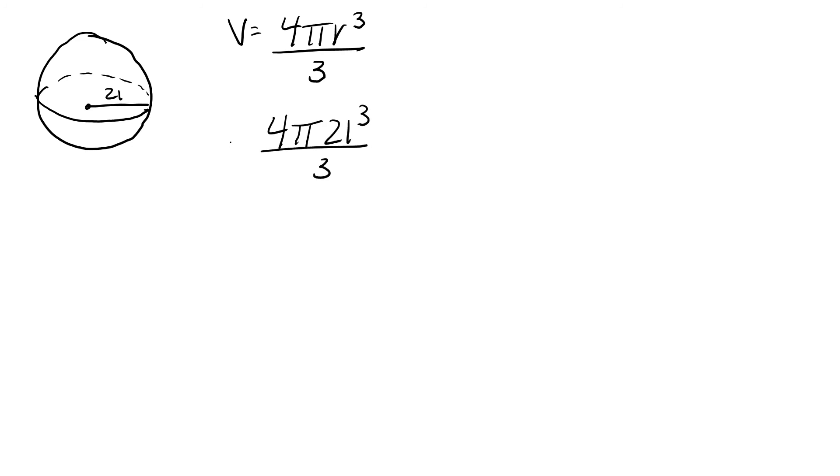So 21 to the third power is going to give us 9261. We take that number and we multiply it by 4 to get 37044. We divide that number by 3 to get 12348.